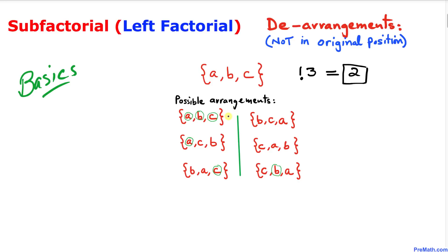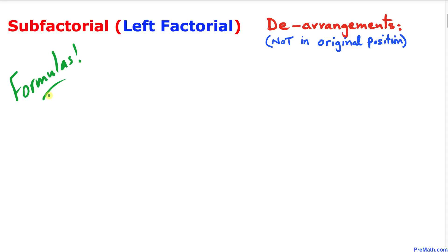The other four options are discarded because in each one, at least one object is in its original position. In the first discarded option, a, b, and c are all in their original positions. In another, a is in its original position; in another, c is in its original position; and in the last, b is in its original position. That's why we toss those out.